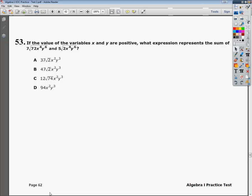Welcome. This is the Algebra 1 End of Course Practice Test 2, question number 53. The question says, if the value of the variables x and y are positive, what expression represents the sum of 7 times the square root of 72x to the 4th y to the 6th, and 5 times the square root of 2x to the 4th y to the 6th?